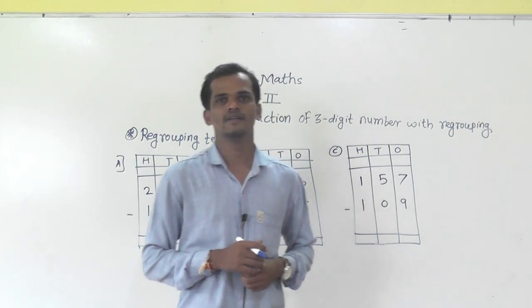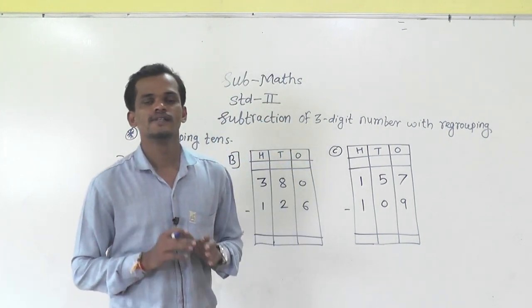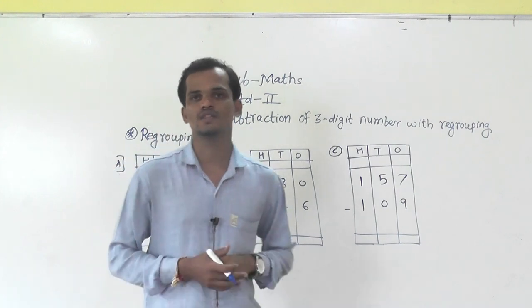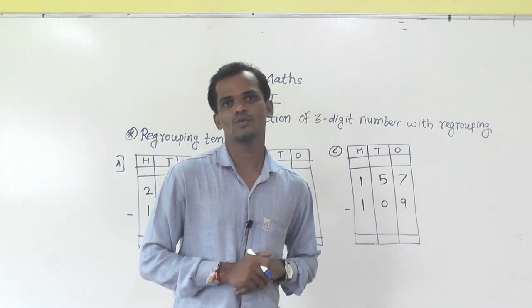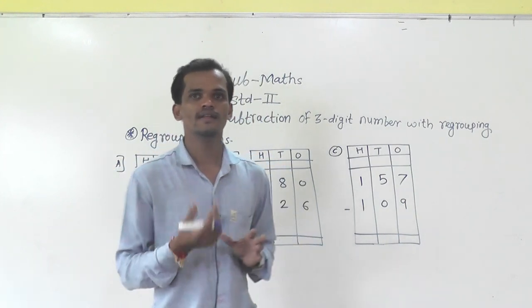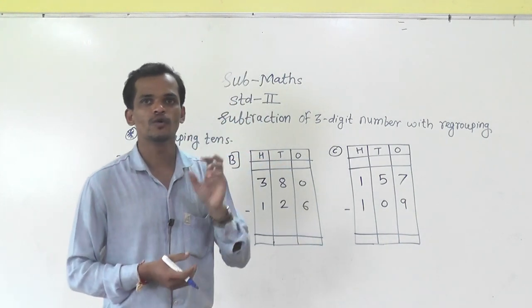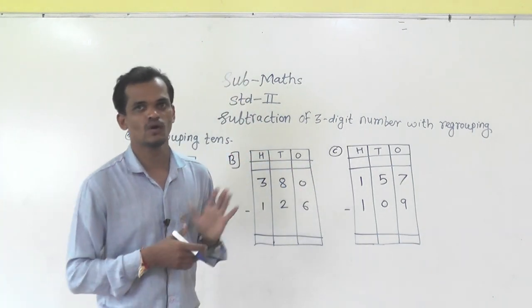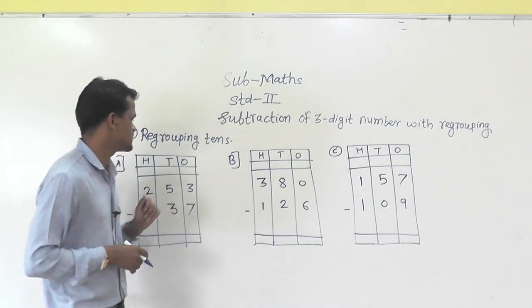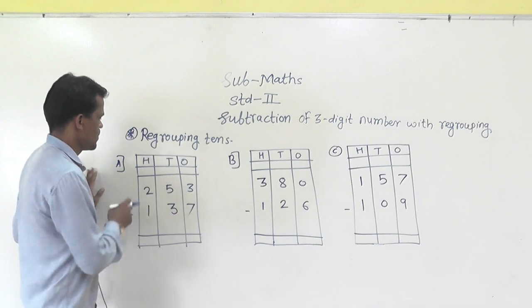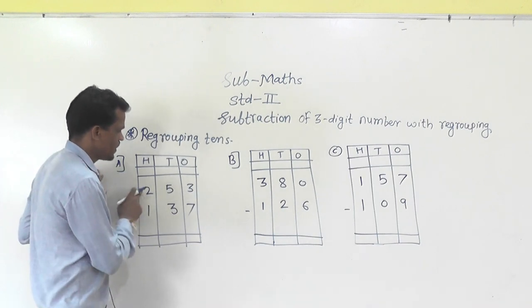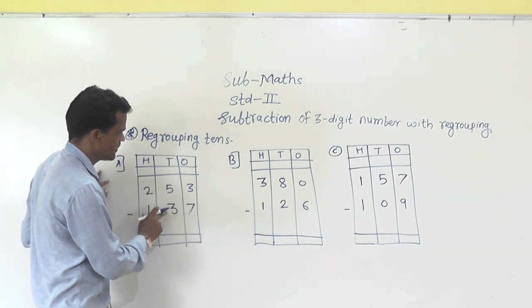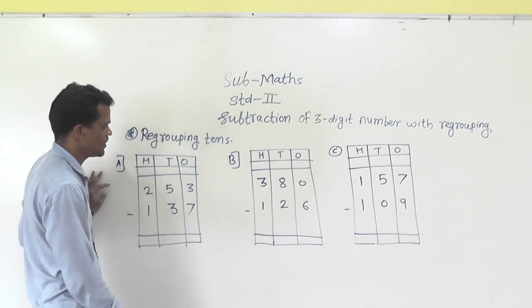Today we will learn subtraction of 3-digit numbers with regrouping. First we will learn regrouping 10. Now we will solve the examples. See here: 253 minus 137.